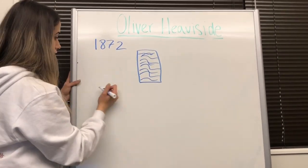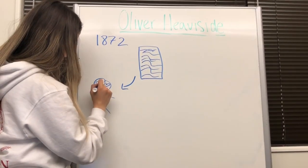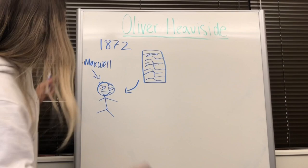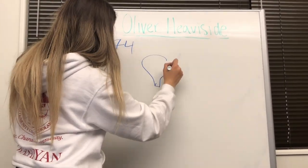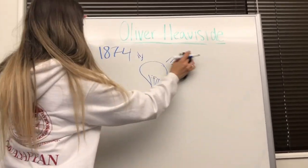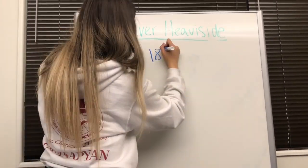In 1872, his first paper, Comparing of Electromotive Forces, was published, which attracted the attention of Maxwell, his biggest inspiration. In 1874, he established the ordinary symbolic method of analyzing alternating current circuits.